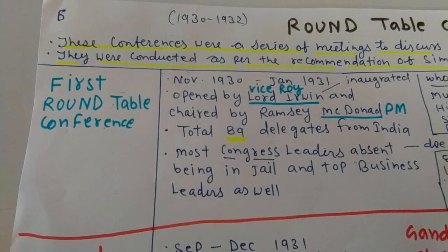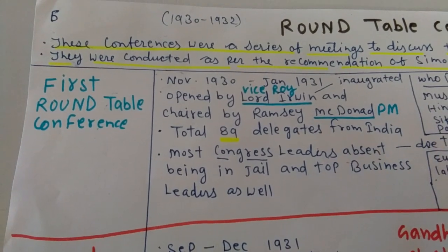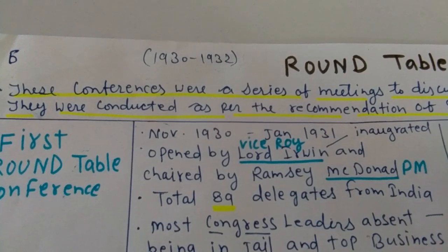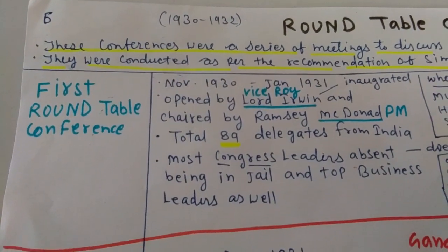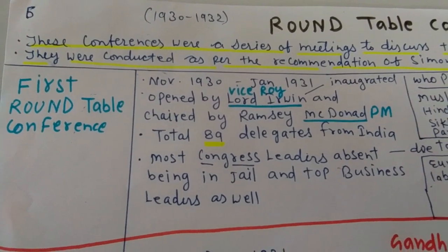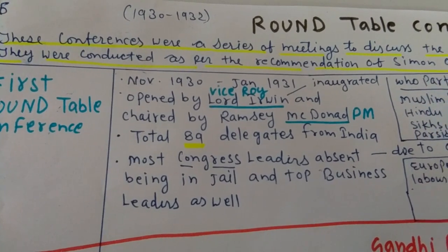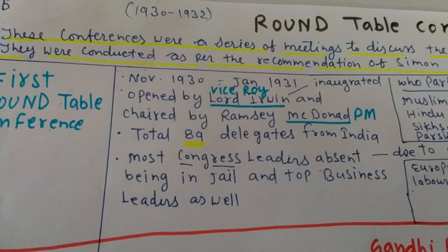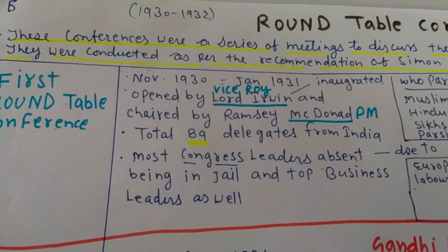We will now discuss the First Roundtable Conference. This conference ran from the year 1930 to 1932. The First Roundtable Conference specifically started from November 1930 and ended in January 1931. It was inaugurated and opened by Lord Irwin, and it was chaired by Ramsay MacDonald.